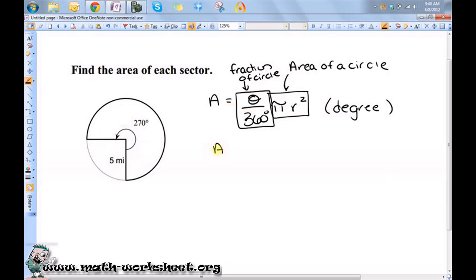So, A is equal to 270 degrees over 360 degrees times pi and 5 miles squared. Okay, now this simplifies to 3 fourths.